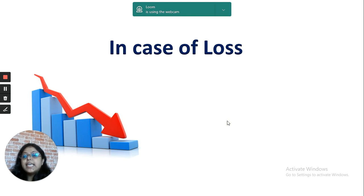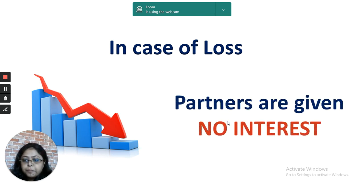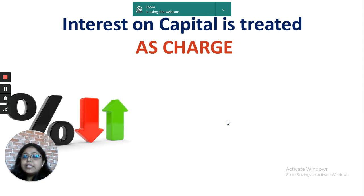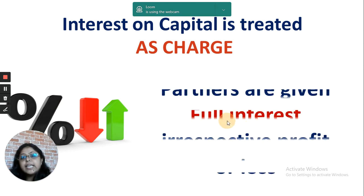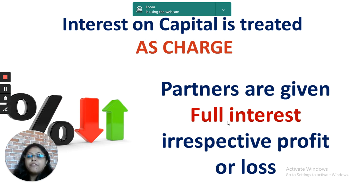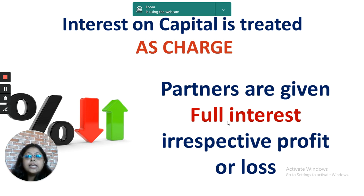The next situation is in case of loss. If the business has a loss and has no money to pay, then no interest will be given when it is treated as appropriation of profit. However, if interest on capital is treated as a charge and taken in the profit and loss account, then regardless of whether the business has profit, loss, or insufficient funds, the full amount of interest has to be given to the partners.